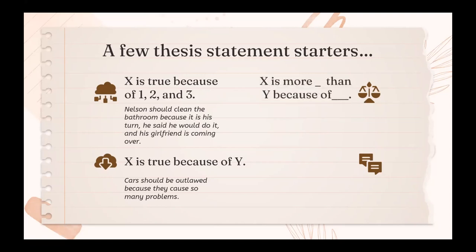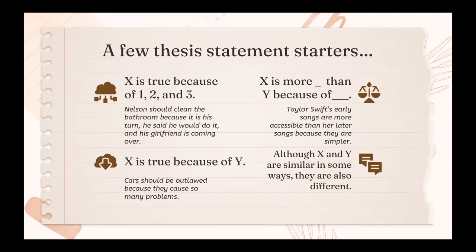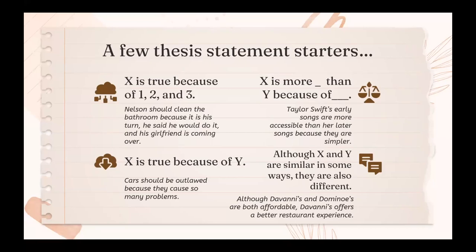A third type of thesis statement is 'X is more blank than Y because of blank.' For example: 'Taylor Swift's early songs are more accessible than her later songs because they are simpler.' This format would be used for a comparison-contrast essay exploring differences between her early and later music. A comparison-contrast essay could also be structured like this: 'Although X and Y are similar in some ways, they are also different.' For example: 'Although Davani's and Domino's are both affordable, Davani's offers a better restaurant experience.' This format shows similarities and differences, and in this example you would need to define what a restaurant experience means. You'll notice that all of these sample thesis statements are somewhat debatable — except of course Nelson cleaning the bathroom, because obviously he should.